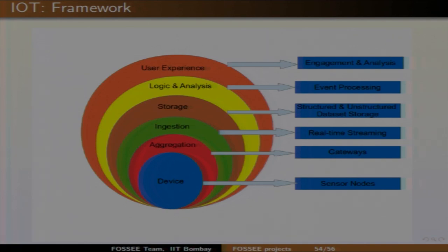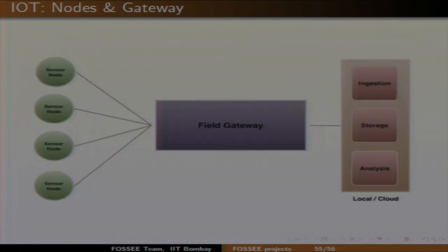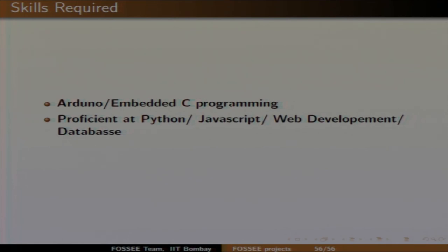The basic algo involves: device-level sensors, a gateway (RPI, BeagleBone, etc.), then the cloud handling ingestion (real-time streaming), storage in a structured manner, and analysis. Sensor data contains noise so garbage values must be filtered out. The event processing layer handles logic and analysis — for example, if temperature crosses 25 degrees, the AC automatically switches on. The user experience layer provides a front-end GUI with plots and controls. Skills required: Arduino Embedded C, JavaScript, database knowledge, and a bit of web development.